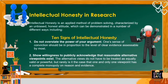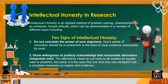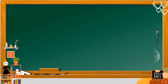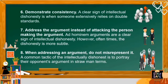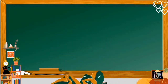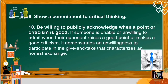I want you to be attentive about intellectual honesty in research — it is an applied method of problem solving characterized by an unbiased, honest attitude. This can be demonstrated through the 10 signs of intellectual honesty: 1) Do not overstate the power of your argument. 2) Show willingness to publicly acknowledge that reasonable alternative viewpoints exist. 3) Be willing to publicly acknowledge and question your own assumptions and biases. 4) Be willing to publicly acknowledge where your argument is weak. 5) Be willing to publicly acknowledge when you are wrong. 6) Demonstrate consistency. 7) Address the argument instead of attacking the person making it. 8) When addressing an argument, do not misrepresent it. 9) Show a commitment to critical thinking. 10) Be willing to publicly acknowledge when a point or criticism is good.